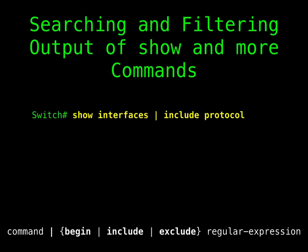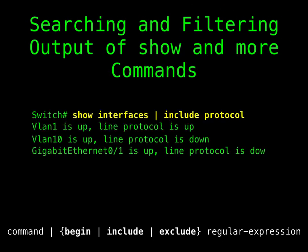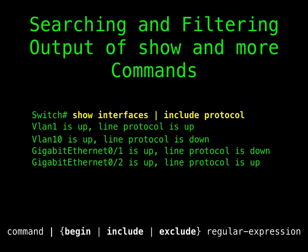You can search and filter the output for show and more commands. This is useful when you need to sort through large amounts of output or if you want to exclude output that you do not need to see. Using these commands is optional. To use this functionality, enter a show or more command followed by the pipe character, then one of the keywords: begin, include, or exclude, and an expression that you want to search for or filter out. Expressions are case sensitive. This example shows how to include in the output display only lines where the expression 'protocol' appears.